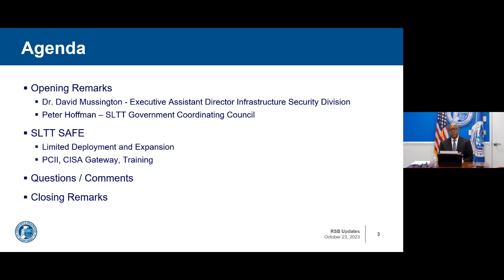In 2021, SLTT officials began requesting access to SAFE to partner with CISA in its efforts to improve security and resilience. This presented an opportunity for capacity building, something we prioritize. From January to July 2022, CISA conducted a six-month SLTT SAFE limited deployment with SLTT partners sponsored by PSAs, in collaboration with representatives from the Iowa Department of Homeland Security and Emergency Management, New Jersey Homeland Security Office, North Carolina Homeland Security Office, Michigan State Police Emergency Management and Homeland Security Division, and Virginia Beach Office of Emergency Management.